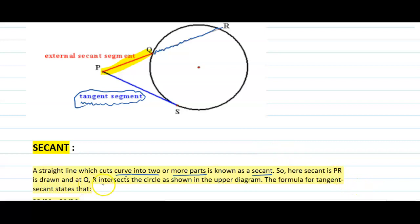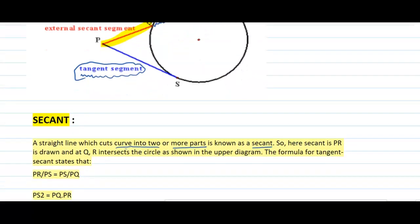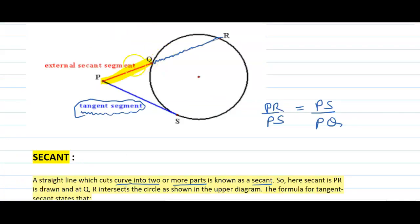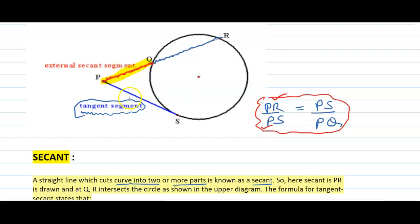PR is drawn at Q and R and intersects the circle as shown in the diagram. We can give you a formula — this is just for extra knowledge. The formula is: PR divided by PS equals PS divided by PQ. So PR is the full length, PS is the tangent segment, and this formula can be used when the external secant segment and tangent segment are given. If you multiply, then PS squared equals PR times PQ.